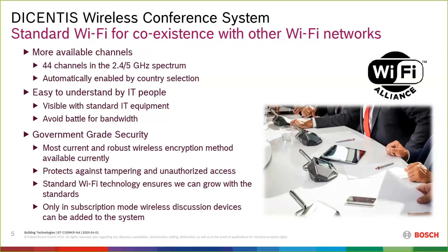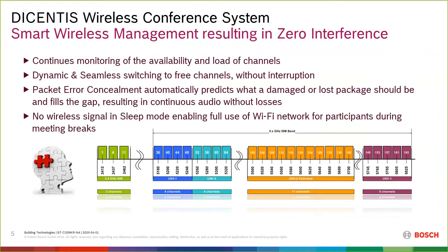What makes this dropout-free is our packet error concealment. It's automatically predicting ahead and detecting if any packet has been lost, corrupted, or damaged. If packet one comes in, packet two is dropped, and packet three comes in, we predict that and draw a line between packet one and three. To the human ear, you're not going to hear that — so we kind of call it a lossless system.